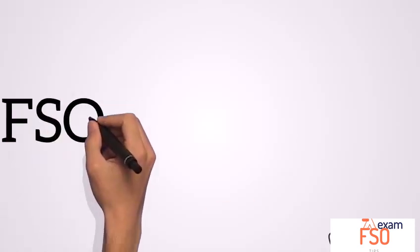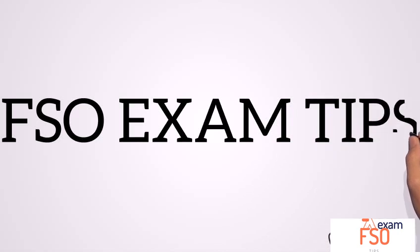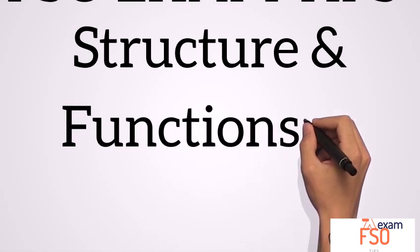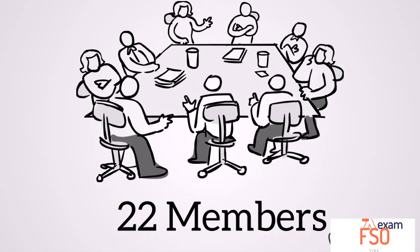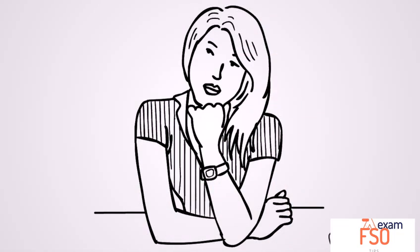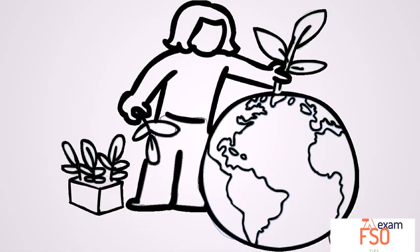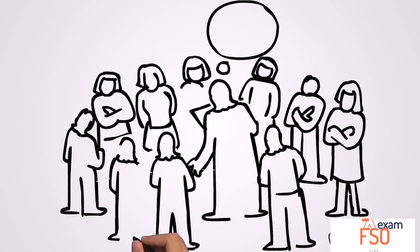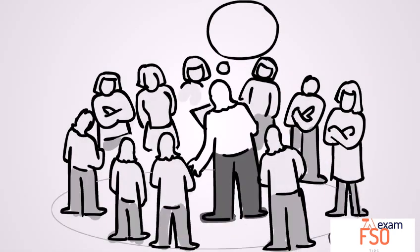Hello everyone, you are watching FSU exam tips. Today's topic is structure and functions of food authority. The food authority has 22 members, and out of these members, one-third are women. The members represent various ministries and departments such as agriculture, commerce, consumer affairs, and many more.